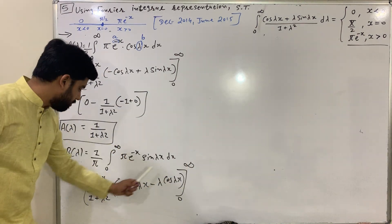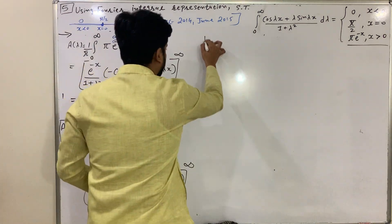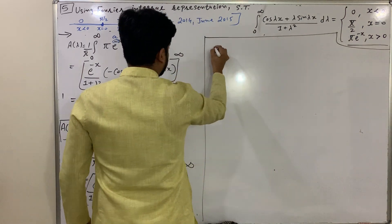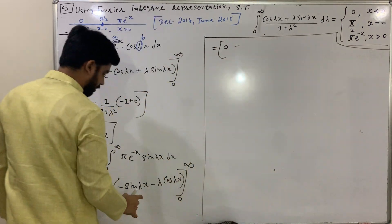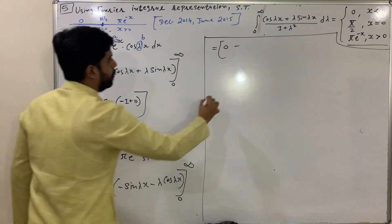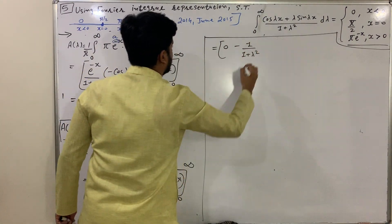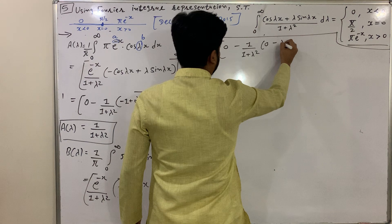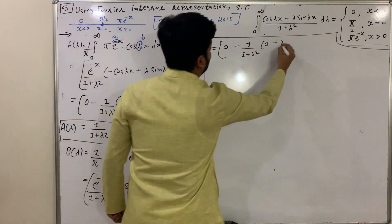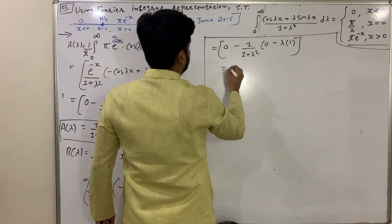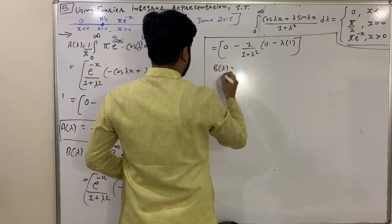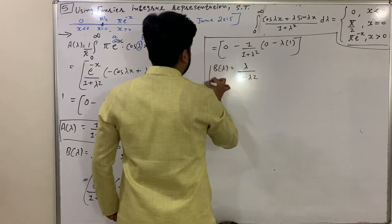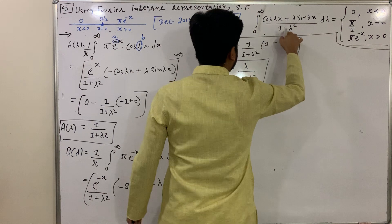Evaluating from 0 to infinity: at the upper limit e^(−∞) = 0, and at x = 0 we get minus [1/(1 + λ²)] · [sin 0 · (0) − λ · cos 0 · (1)]. That gives minus [−λ/(1 + λ²)], so b(λ) = λ/(1 + λ²).